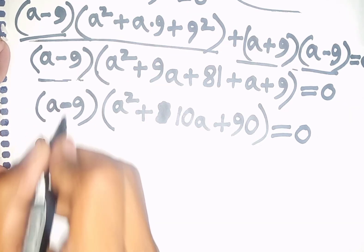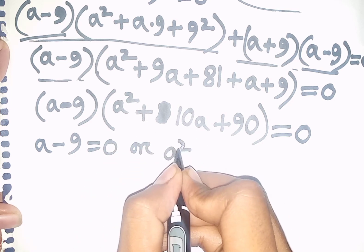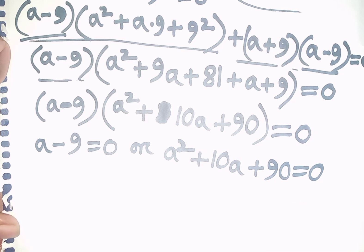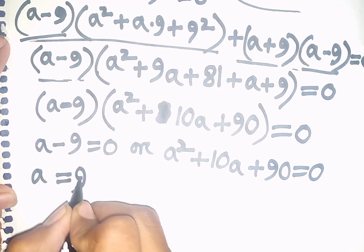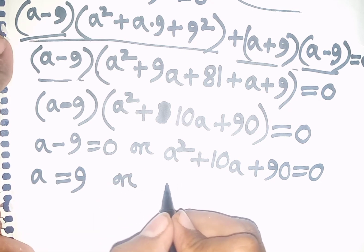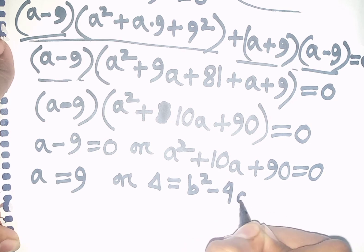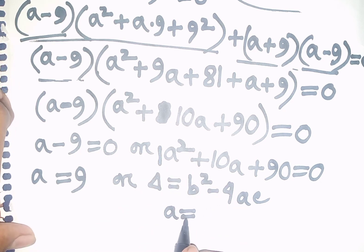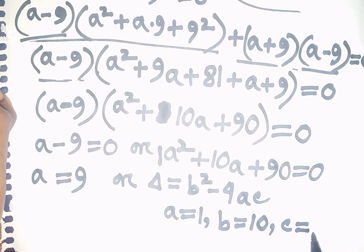Now we can write here: a - 9 = 0, or a² + 10a + 90 = 0. Now a = 9 — take to the right side, so this will be a = 9. Or here we can apply the discriminant formula. So delta = b² - 4ac. Now here, according to the discriminant formula, a is 1, b is 10, c is 90.